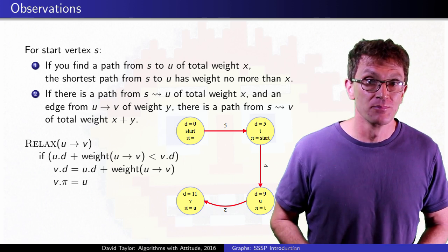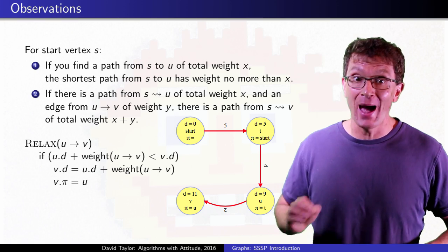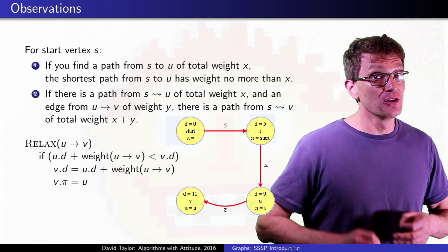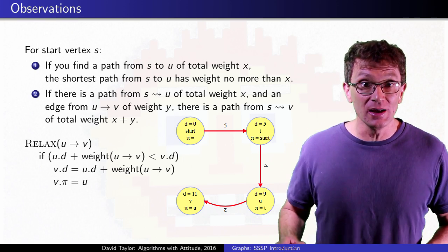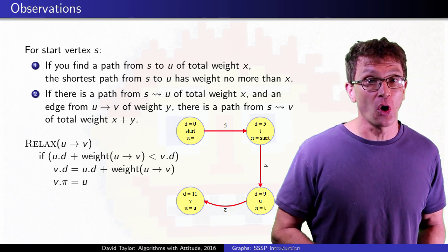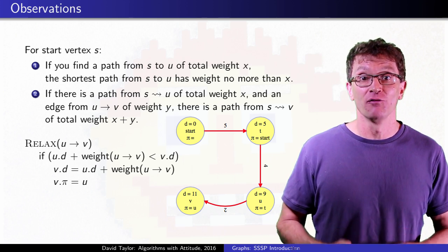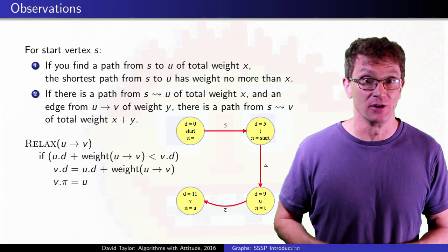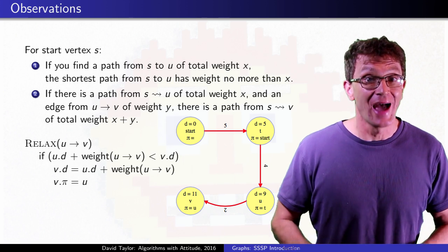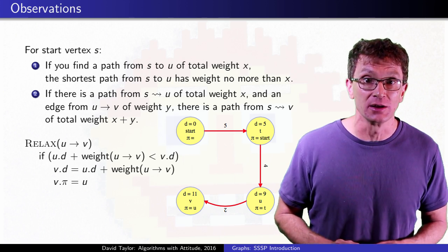Think of it this way. Because of the weight 9 path to U and the weight 2 edge from U to V, the shortest path from start to V must have a path of weight at most 11. Your solution has to satisfy that constraint.